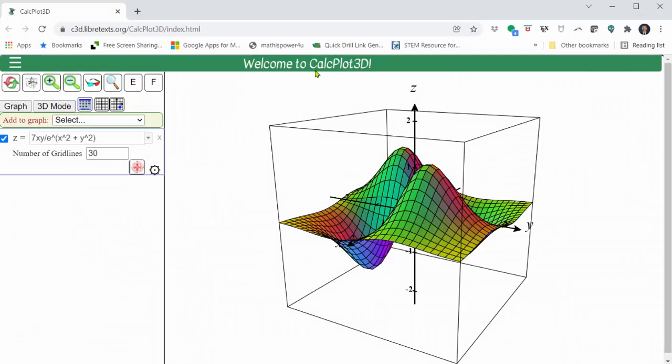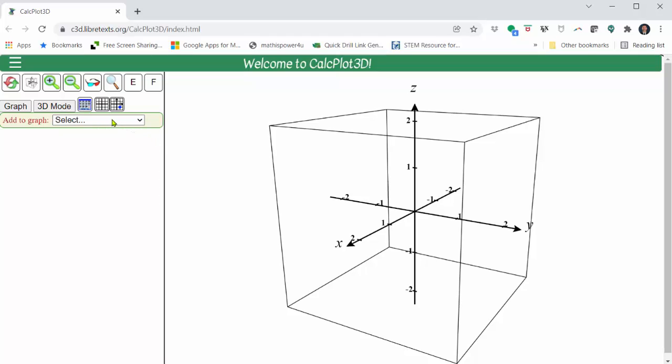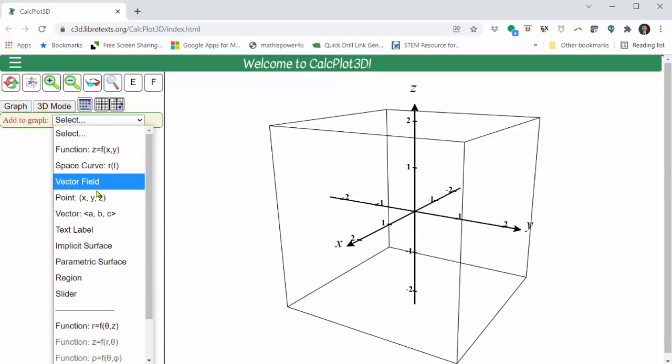Following the URL, by default we have the following surface graphed. Let's go ahead and clear this by clicking the small x to the right of the equation. Then click on select under add to graph and select vector field.